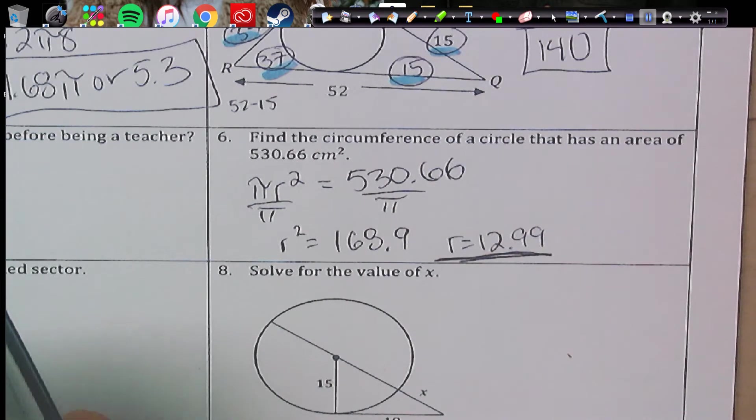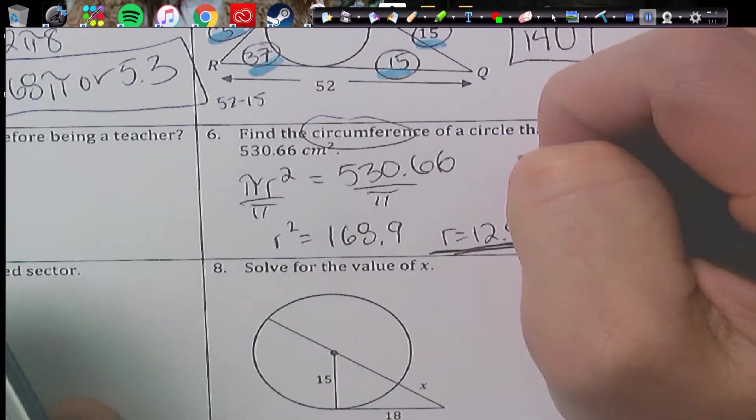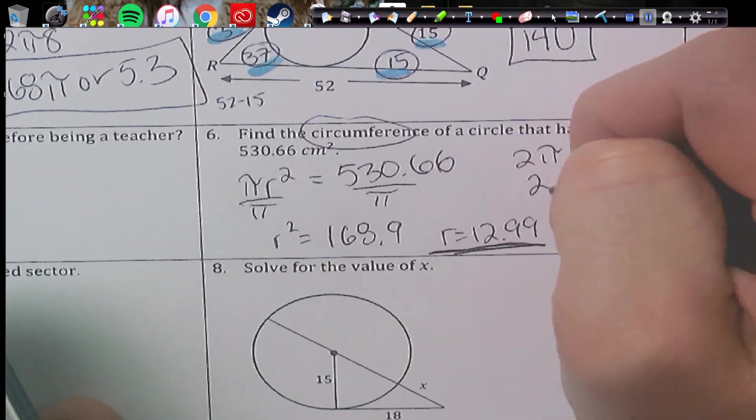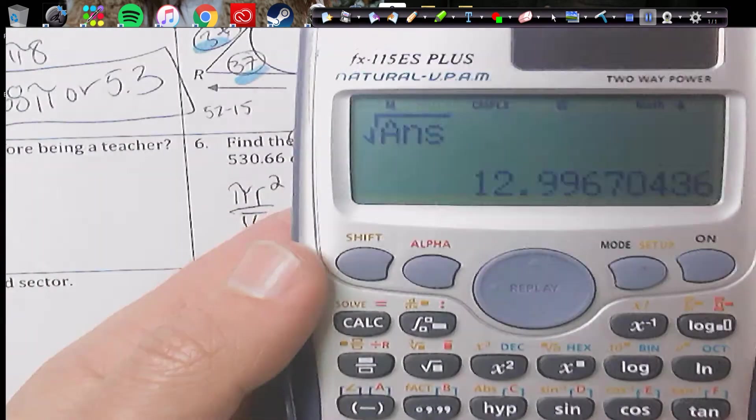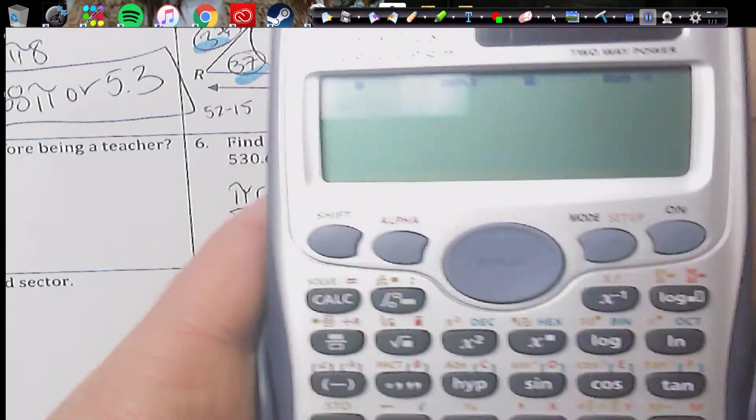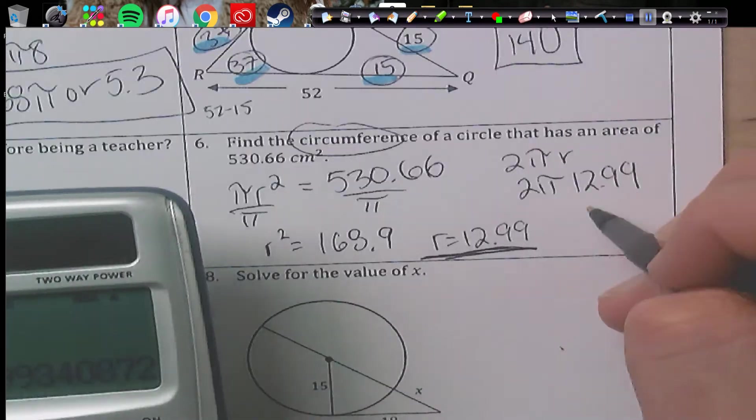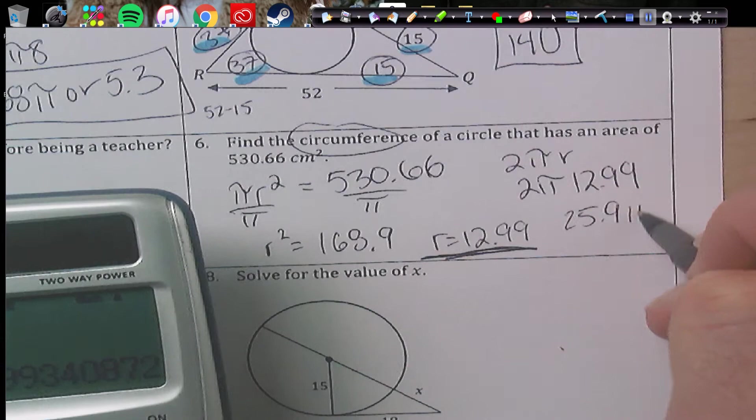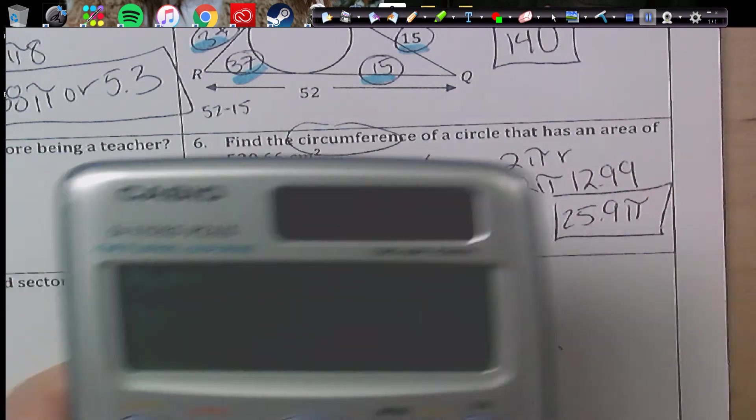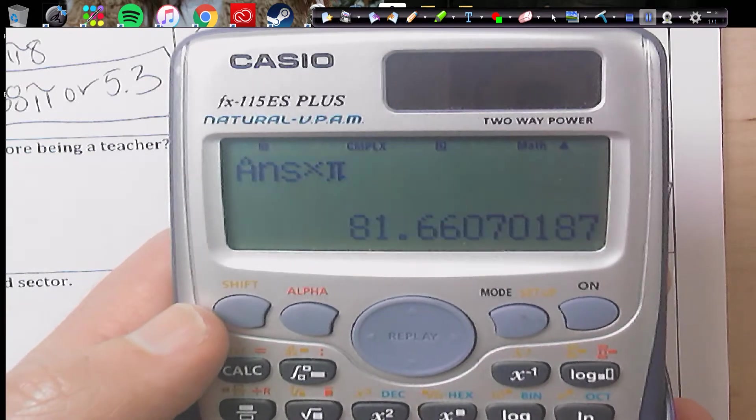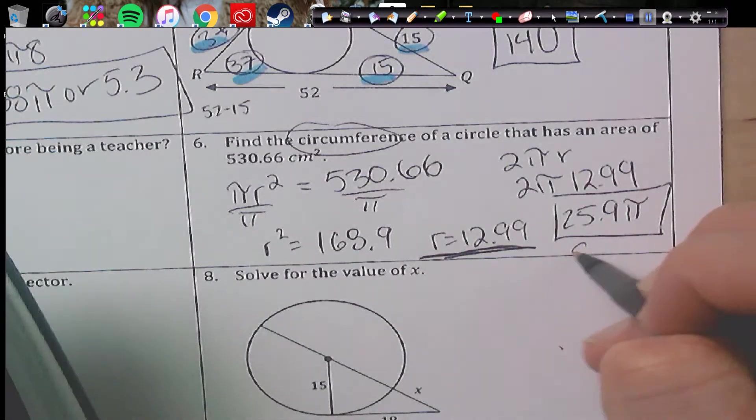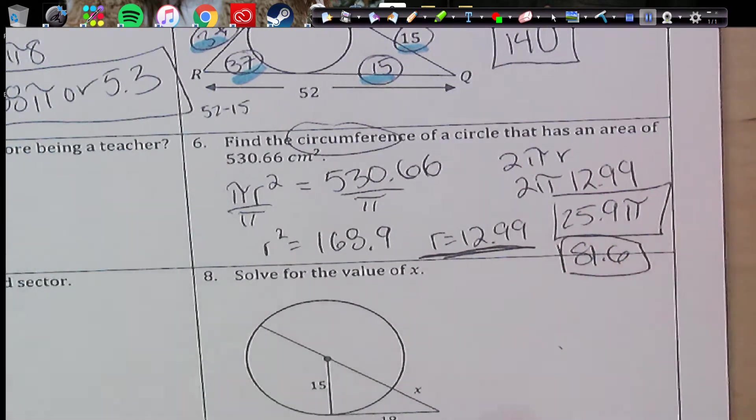But then I want to find the circumference. So I'm going to do 2πR, or 2π times 12.99. And in my calculator, I already have it. So I can just do times 2, which is going to give me 25.99. So I can give you 25.9π, or I can also multiply that number by π. And we get 81.6. So either one works.